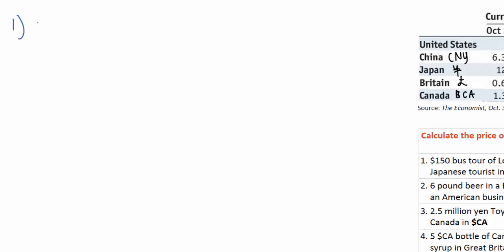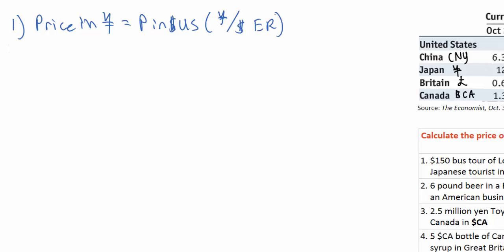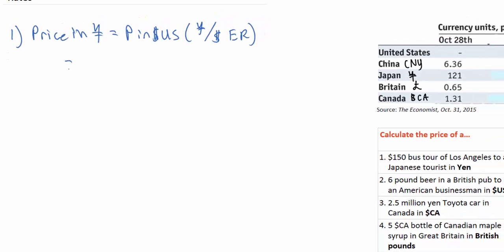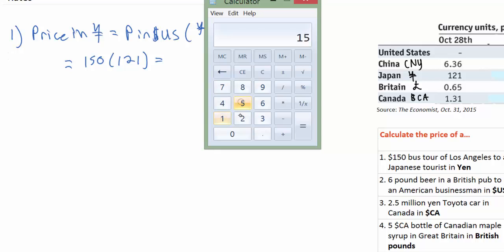To find the price of an American product in yen, we must multiply the price in US dollars by the yen-dollar exchange rate — in other words, multiply the price in dollars by however many yen there are per dollar, which we are given in our table. We know that the yen-dollar exchange rate is 121 yen per dollar, so we multiply $150 by 121 yen to get 18,150 yen.